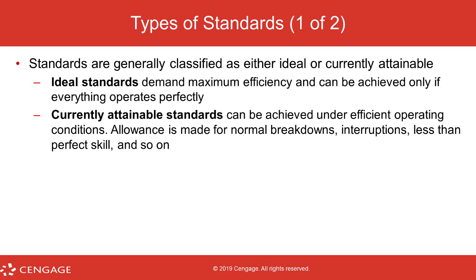When coming up with quantity and price standards, you could come up with what's called an ideal standard. This is basically if all the stars aligned and everything goes perfectly — there are no manufacturing or business interruptions, prices remain stable and competitive for raw materials, and everything goes very well. That's the ideal standard: maximum efficiency, everything operating perfectly. Of course, we know that's not really how business always operates — it's something we should strive for, but not how business always operates.